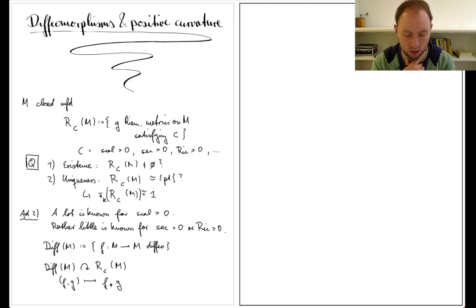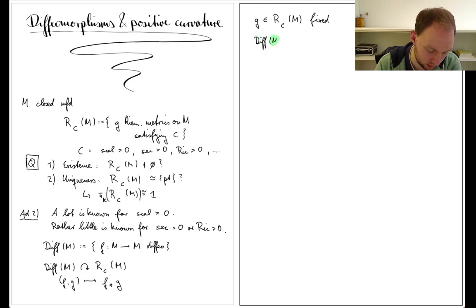by sending a pair (F,G) of a diffeomorphism and a Riemannian metric to the pushforward of G along F. Now, let us fix a metric G in Rc(M) satisfying C. We can then consider the orbit map associated to this metric, which maps a diffeomorphism to the pushforward of G along that diffeomorphism. This induces a map on homotopy groups.